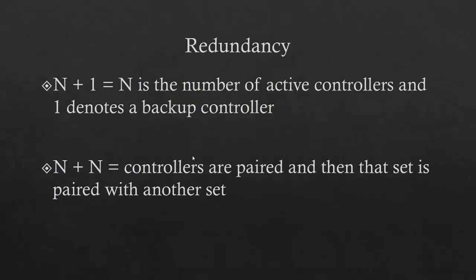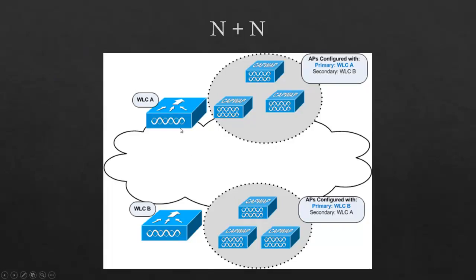Then there's N plus N. Basically the controllers are paired, and each wireless LAN controller only runs half the load — the pair controls the full load. So with the 2106s, I'd have two wireless LAN controllers, each dealing with four access points because the capacity is eight — that's half the capacity. If one dies, the other four access points jump over and that controller is then at full capacity. There's a primary and a secondary, but both keep half the capacity going, and if one dies the other picks up the other half.